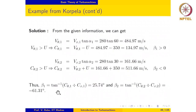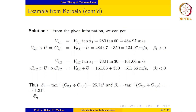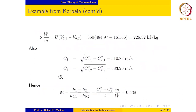The blade angle at the inlet may now be evaluated as arctan of Cθ1 over Cx1, which gives us 25.74 degrees with a positive sign. The blade angle at the outlet is arctan of Cθ2 over Cx2, from which we get 61.31 degrees, and we attach a negative sign to the blade angle at the outlet.